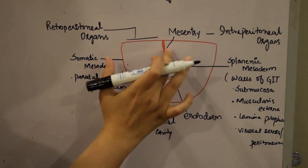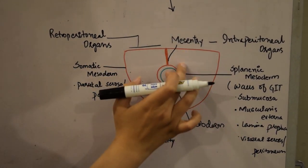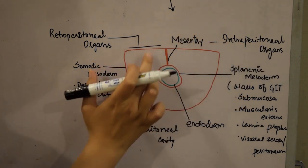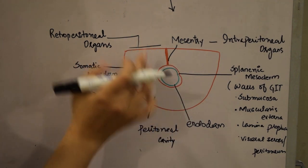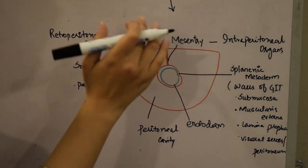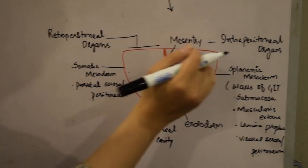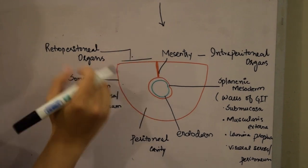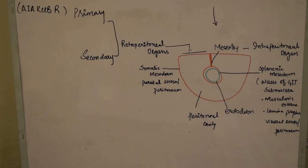Organs placed between the parietal and visceral peritoneum and attached by mesentery are called intraperitoneal organs. Organs outside the peritoneum and not attached by mesentery are retroperitoneal organs — either originally retroperitoneal or pushed outward against the posterior abdominal wall during development. Examples include the kidneys, adrenal glands, parts of the duodenum, and ascending and descending colon.